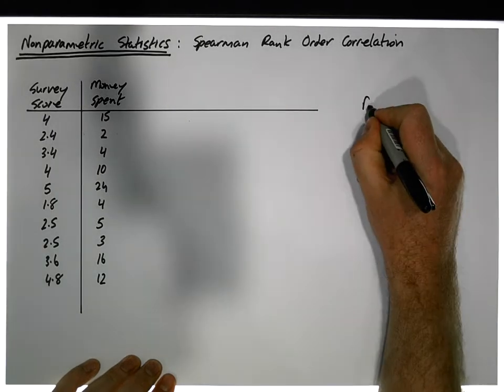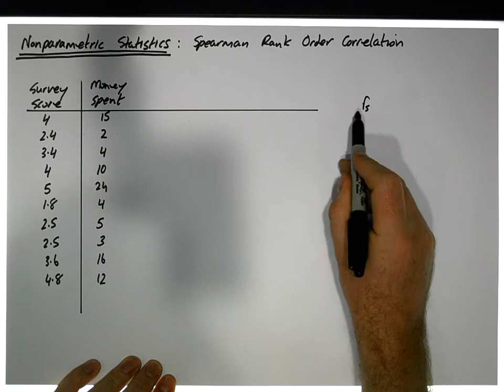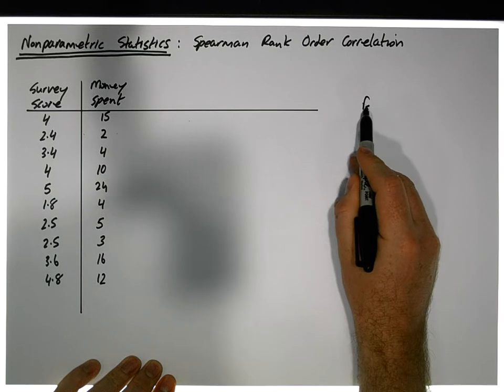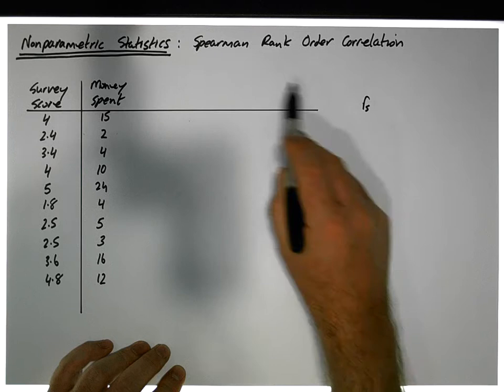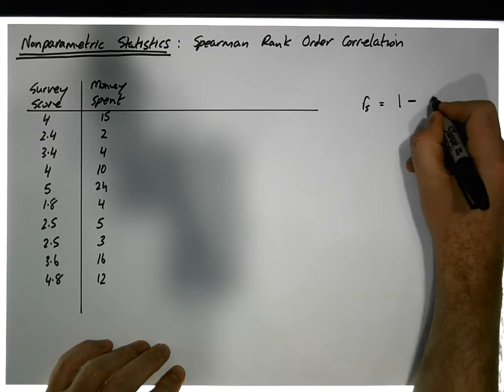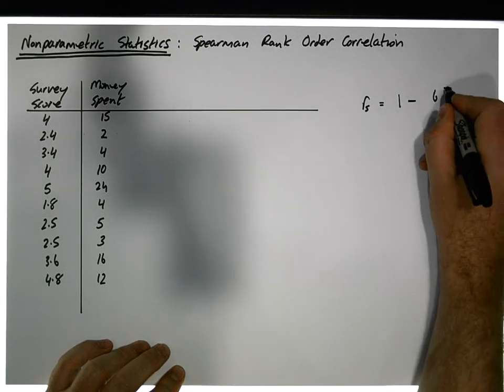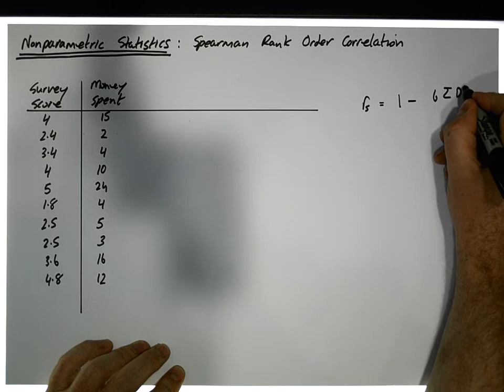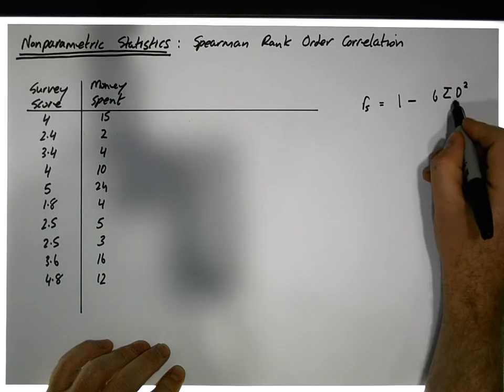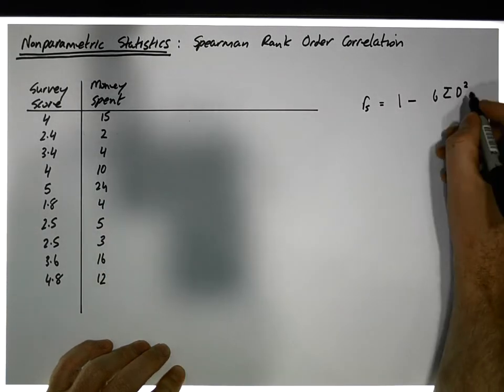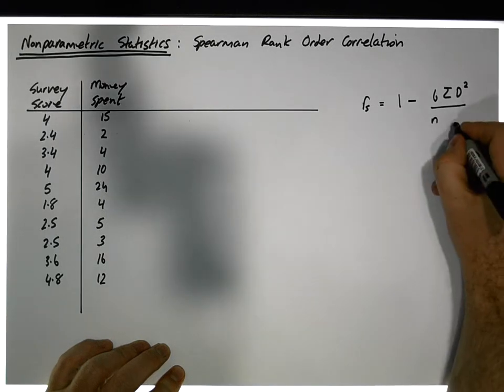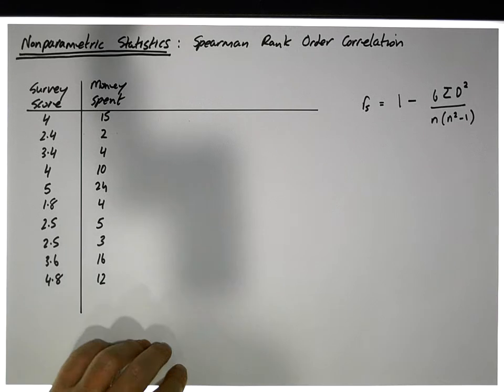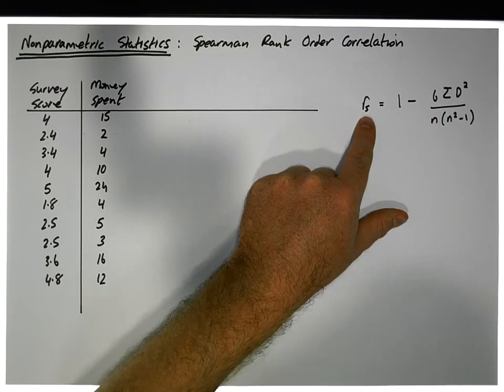The statistic is quite straightforward to calculate. It's small r subscript s to represent, to differentiate it from the Pearson r value for the sample. The s in this case represents Spearman. And simply it's equal to 1 minus 6 times the sum of the squared distances, or the squared differences between the ranks of the paired values, which needs to be divided by n, which is the number of paired observations, times n squared minus 1.